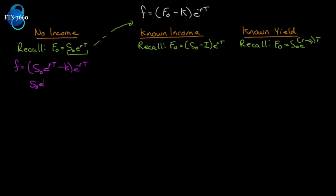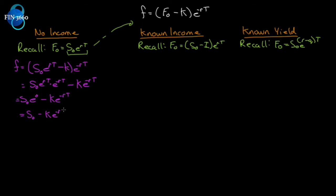Expanding: S₀e^(rT) times e^(-rT) minus Ke^(-rT). When multiplying power terms you add the exponents, so e^(rT) times e^(-rT) equals e^0, which is 1. So the result simplifies to S₀ minus Ke^(-rT). We've now expressed the value in a much simpler form.